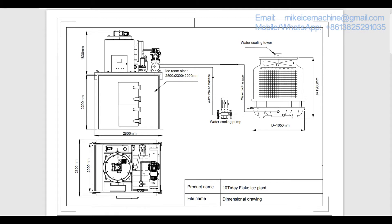This is the compressor, and this is the water cooling condenser. This is the water cooling tower, and this is the water cooling pump — the pump maintains the water circulation between the condenser and the cooling tower. Water goes into the condenser from one line and comes out the other. Heat is carried from the ice machine to the tower and released into the ambient.